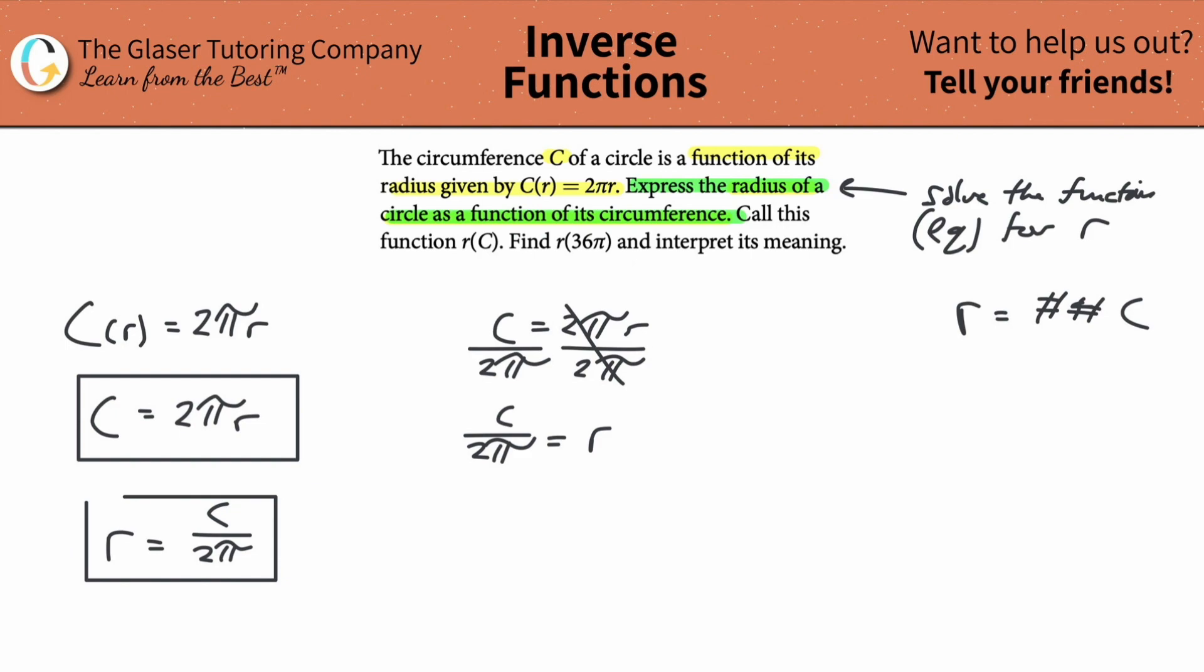So this formula represents the circumference as a function of radius. This represents the circumference of a circle as a function of its radius, and this represents the radius of a circle as a function of its circumference.